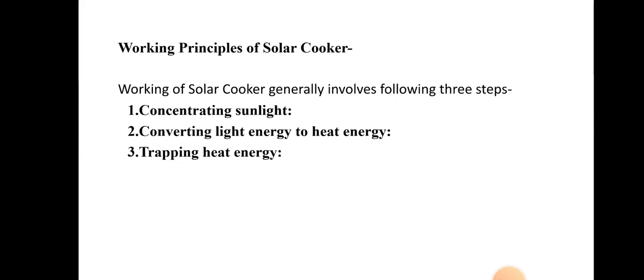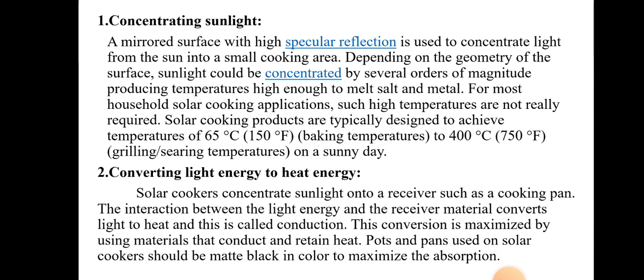Let's see all three steps one by one in detail. The first step is concentrating sunlight. A mirror surface with higher specular reflection is used to concentrate the light from the sun into a small cooking area. Depending on the geometry of the surface, sunlight could be concentrated by several orders of magnitude, producing temperatures high enough to melt salt and metals.